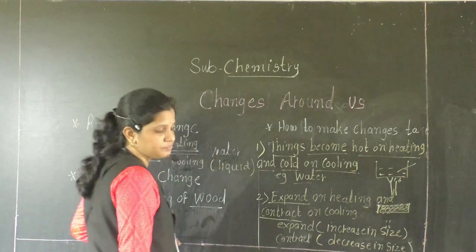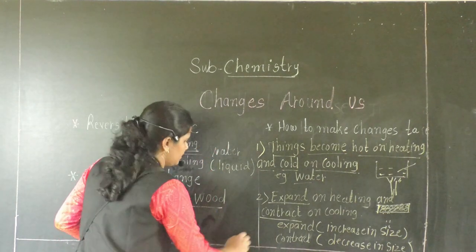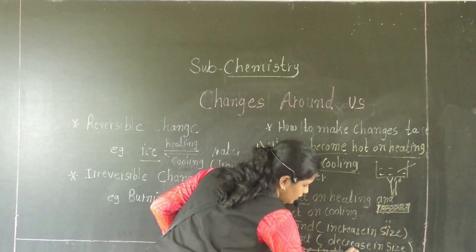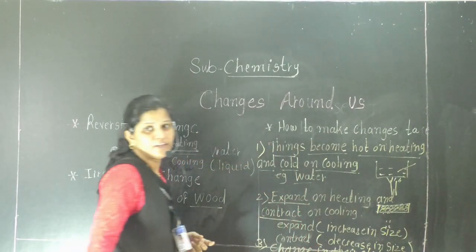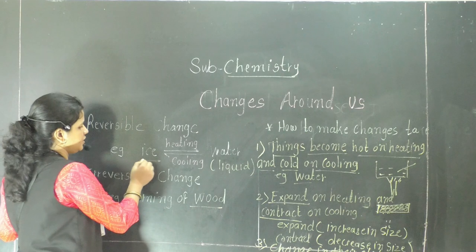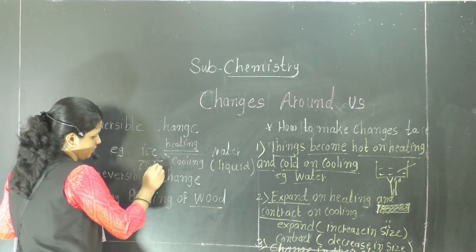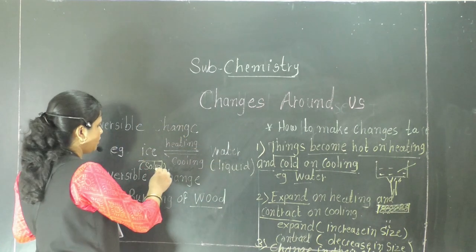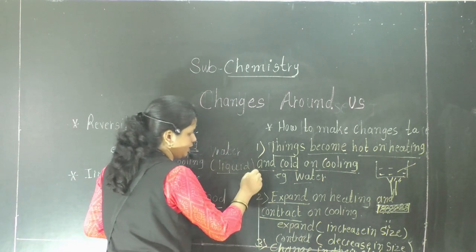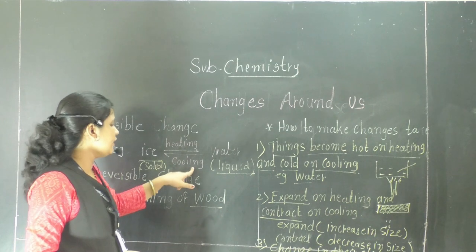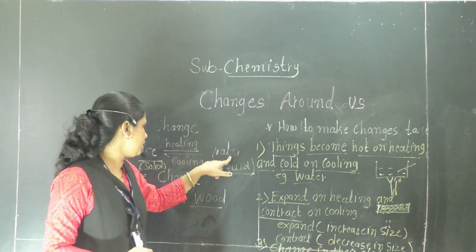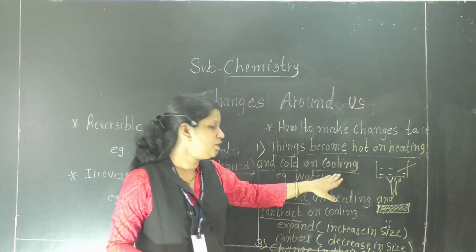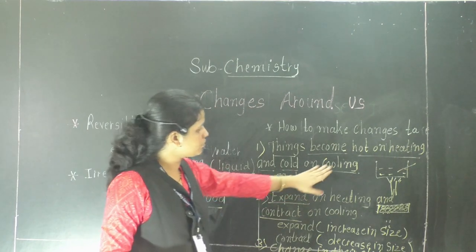The third point is change in state. Ice is in which state? Solid state. When you provide heat, ice converts into water — solid state converts into liquid state on heating. And then again on cooling, liquid state converts back into solid: this water is converted into ice. So these changes in state also occur because of heating and cooling. Most of the changes occur because of heating and cooling.